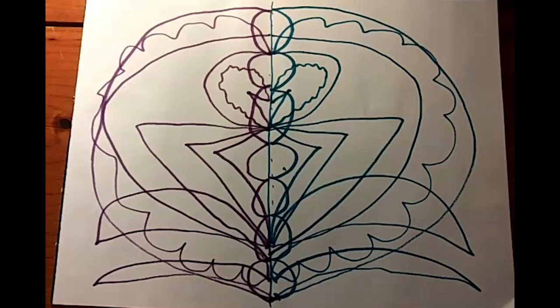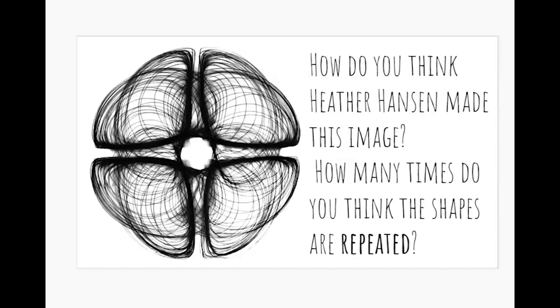This is an artwork by an artist named Heather Hansen. How do you think she made this image? Does it look familiar? It's symmetrical like the one that we made. How many times do you think the shapes are repeated? I bet you could even count them. Every single line is another repetition of the shape. Almost like the rings on a tree. She used charcoal in both hands, just like we used our markers just now.